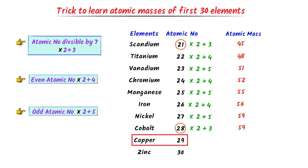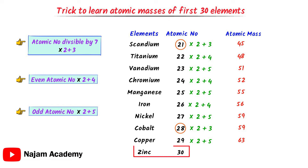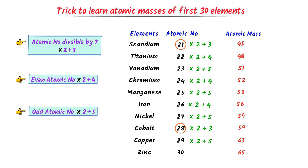The atomic number of copper is 29. I multiply 29 by 2 and add 5 to it. I get 63. Remember that we cannot find the atomic mass of zinc by these tricks — it is an exception case. Therefore, using this trick, we can easily find the atomic masses of the first 30 elements of the periodic table.